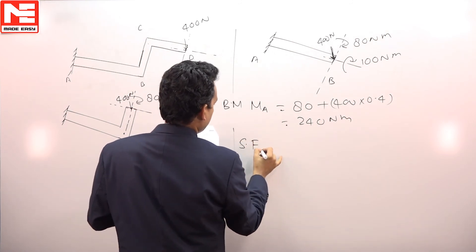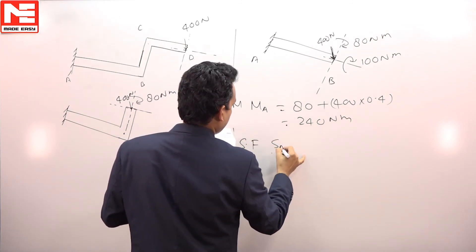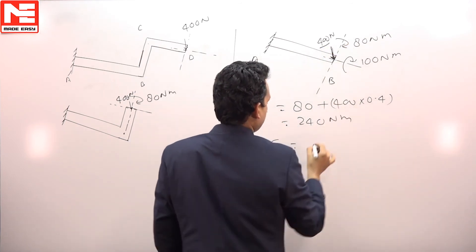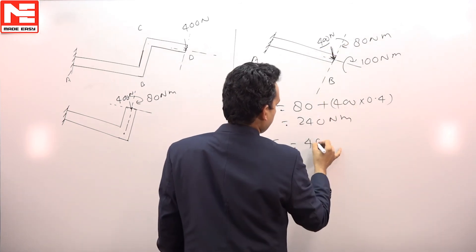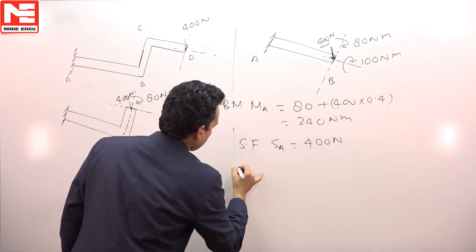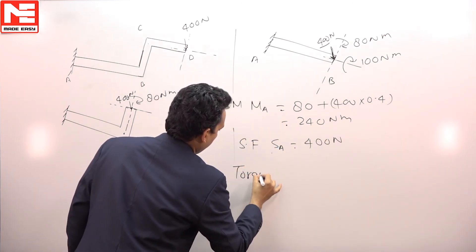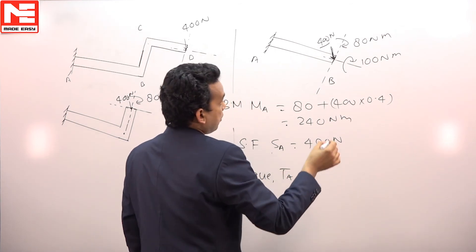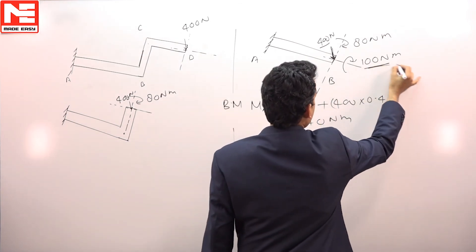If you find shear force at A, this 400 Newton is the shear force since it is a transverse force. And at last, if you find torque, that is T at A, out of these two couples, this 100 Newton meter is the torque because it is about the longitudinal axis.